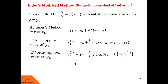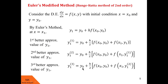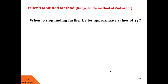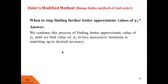The third better approximate value of y1 is: y13 = y0 + (h/2)·[f(x0, y0) + f(x1, y12)], where y12 is obtained in the previous step. We continue this process until the values of y1 in two successive iterations match up to the desired accuracy. If the values at the third and fourth iterations match up to a few decimal places, we stop and accept that value as correct to those decimal places.